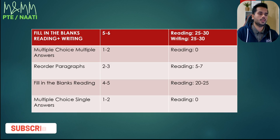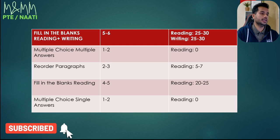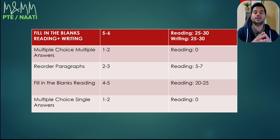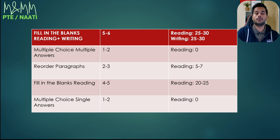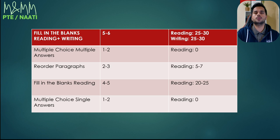Followed by the reading module — five topics in the reading section. The number of questions has only been reduced for multiple choice single and multiple answers, from 2 to 3 down to 1 and 2. The other topic questions remain exactly the same. For fill in the blanks reading plus writing, for 5 to 6 questions you get 25 to 30 marks in reading and writing both — exactly the same as before. For fill in the blanks reading, 20 to 25 marks. These two topics are going to be game-changers whether you're aiming for 50, 65, or 79.